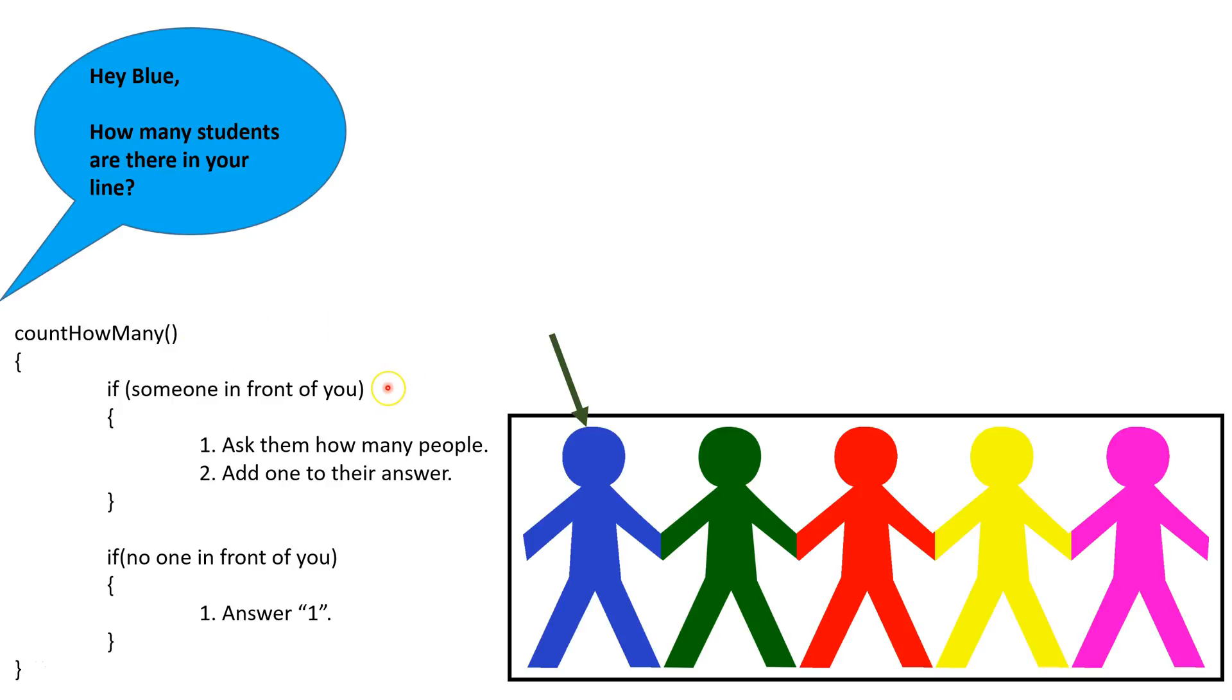The first part is if there is somebody in front of you, you ask them how many people are in their shorter line. Once they answer, you add one to their answer. This is called the recursive case because it ends up calling the algorithm count how many again.